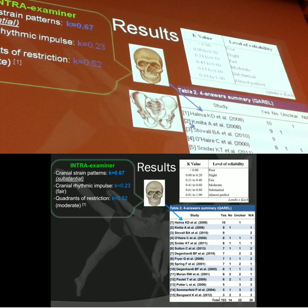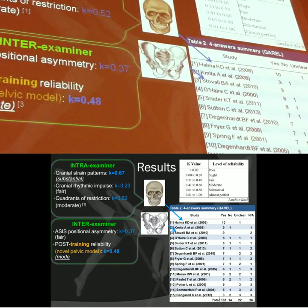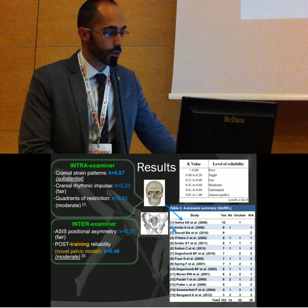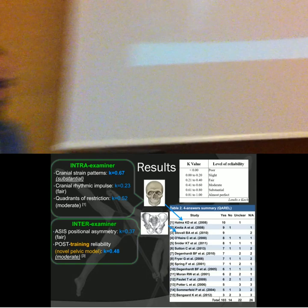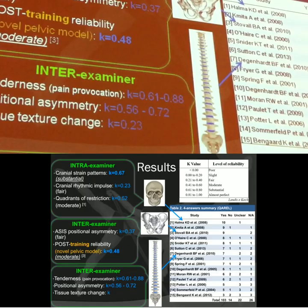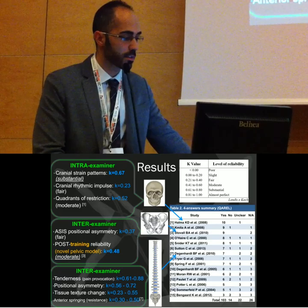Talking about the pelvis, there is an important study because they examined asymmetry and then conducted consensus training afterwards. Degnard will talk about consensus training tomorrow, and you can see it actually improved the reliability. Talking about the back, Degnard's inter-examiner study is interesting because he compared outcomes with the TART criteria and found a ranking among the four TART criteria — tenderness and pain provocation was the best one.